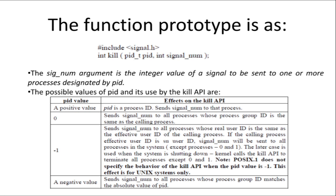The kernel calls the kill API when the system is shutting down and wants to terminate all processes. Note that POSIX.1 does not specify the behavior of the kill API for a PID value of -1. For a negative PID value other than -1, the signal number is sent to all processes whose process group ID matches the absolute value of the PID.